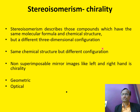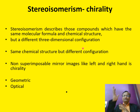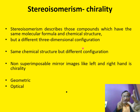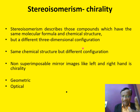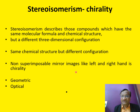Stereoisomerism describes those compounds which have the same molecular formula and chemical structure, but a different three-dimensional configuration. So chemical formula is the same, atomic formula is the same, but the three-dimensional configuration is different — that is what is called stereoisomerism: same chemical structure, but different configuration.